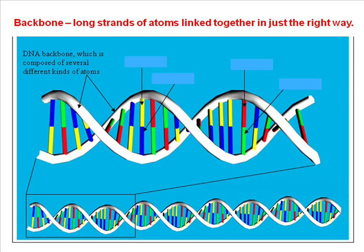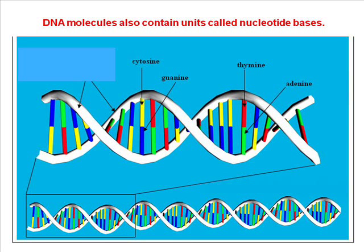There are a couple of parts of the DNA molecule structure we need to learn about. First is the backbone — those are the long strands shown here in silvery white, which are long strands of atoms linked together in just the right way. The other part of the DNA structure that carries the information are units called nucleotide bases. There are four different nucleotide bases: cytosine, guanine, thymine, and adenine. Those four, in all their various combinations, give us all the information that DNA holds.